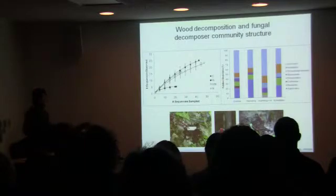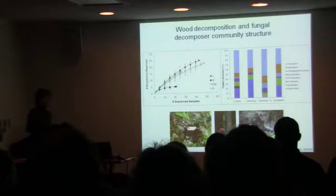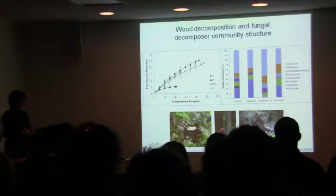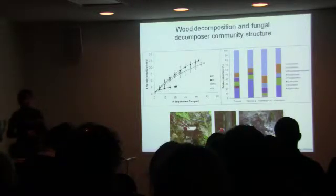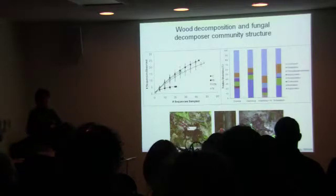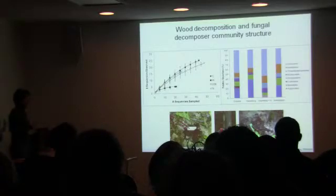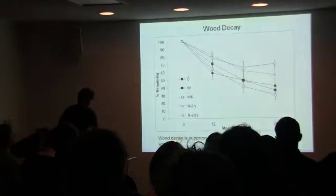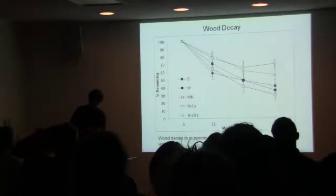The final example looking at mycorrhizal and wood decay fungi in relation to ecosystem function is work done by Alice Katasta in my lab at UNH. She looked at the colonization of wood blocks over a two-year period and attempted to link the diversity and community composition of wood decay fungi with the trajectory of wood decay itself. She has a poster upstairs where you can look at the details later today.